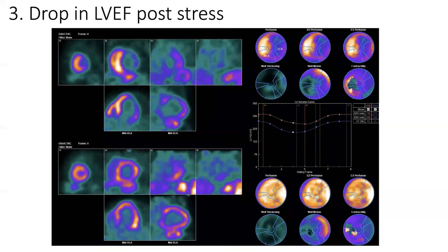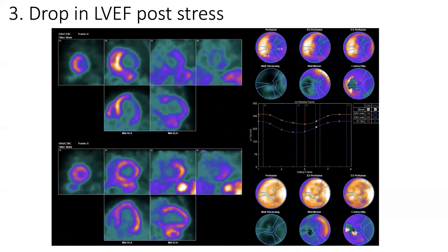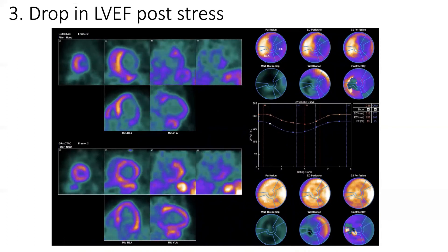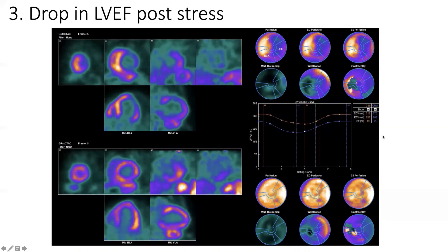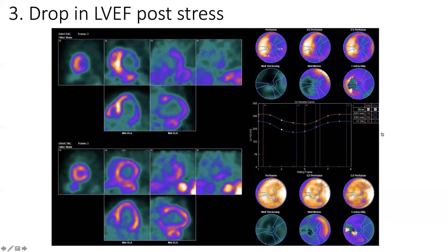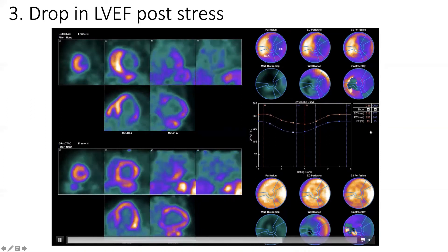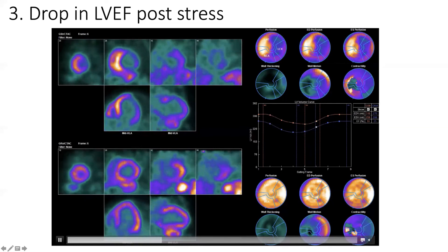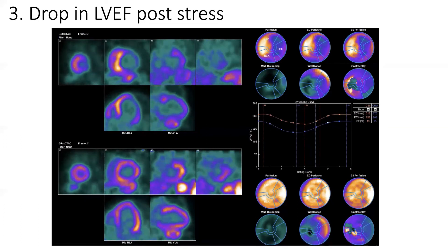There is another sign because with the myocardial PET scan we can also evaluate the gated function of the left ventricle. As you can see here, there is a drop after stress from an ejection fraction of 25 at rest to 19 after stress. This drop is related to post-ischemic stunning, and it is not a good sign.